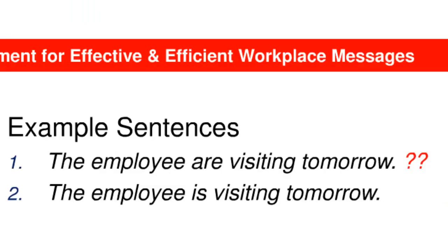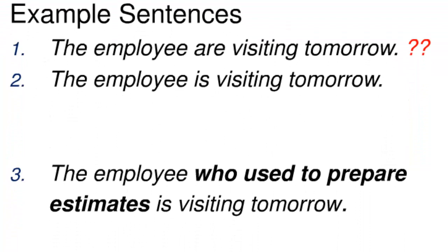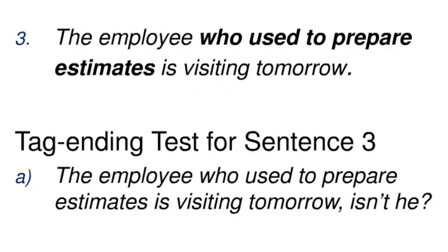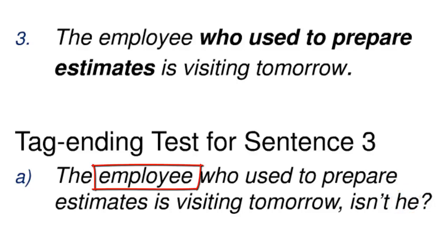Sentence 1 just doesn't occur in either speech or writing. But English allows words to appear between the subject and verb, and that sometimes makes it difficult to determine which noun functions as the subject. Let's apply an operational test to identify the subject in sentence 3. In English, any declarative sentence—you might have called this an independent clause in the past—can be transformed into a tagged question. Sentence 3a shows how this works. A tagged question includes an ending with an auxiliary verb form, like IS in our example, which has been made negative to ISN'T, and a pronoun like HE. Forming a tag ending helps you identify the subject, because the pronoun always refers back to the subject. So any native speaker of English knows HE means employee in sentence 3—that means employee is the subject.